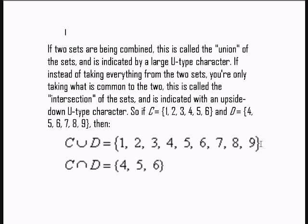If two sets are being combined, this is called a union of the sets and is indicated by a large U-type character. If instead of taking everything from the two sets, you're only taking what is common to the two, this is called the intersection of the sets and is indicated with an upside-down U-type character.